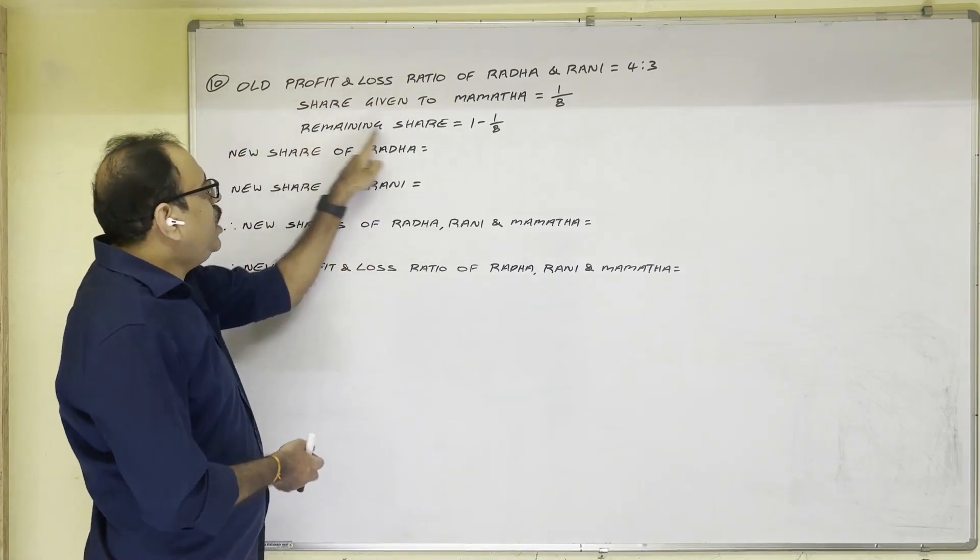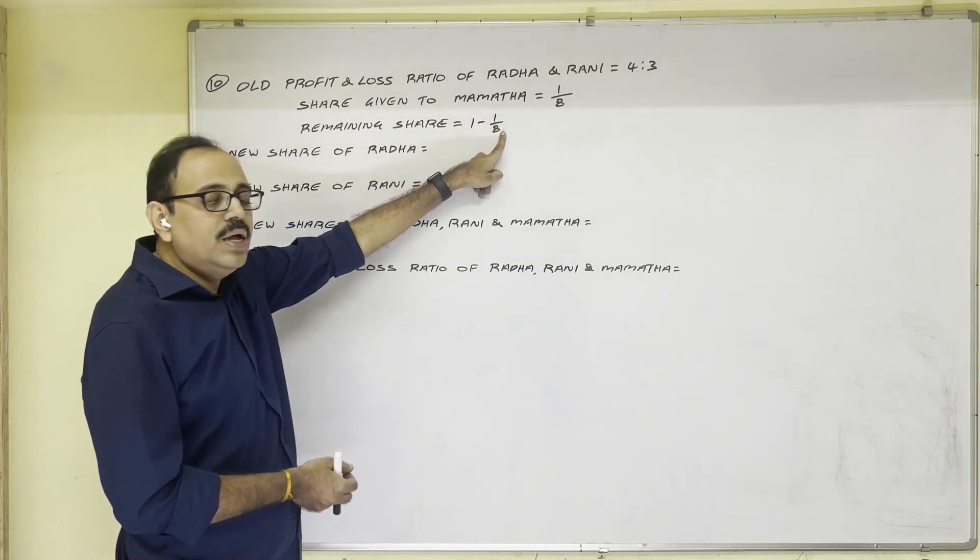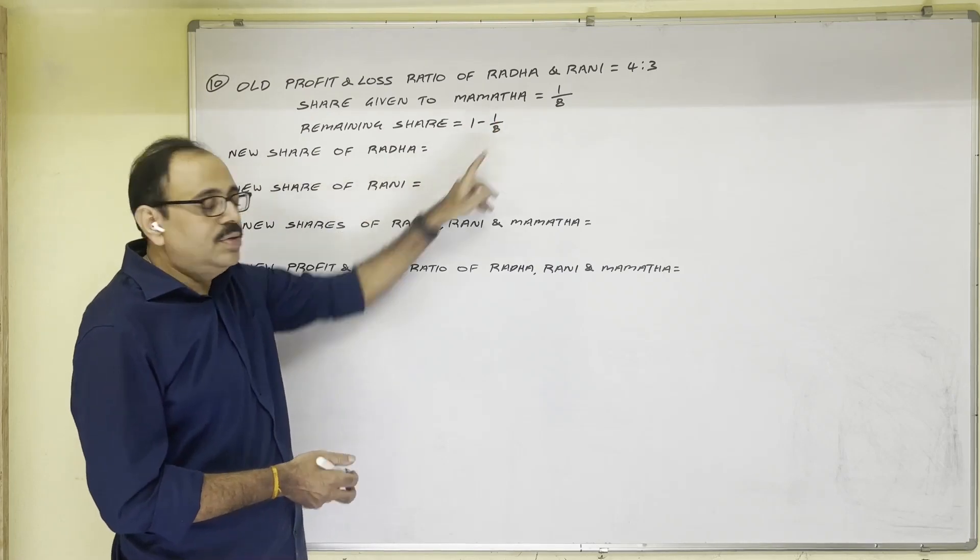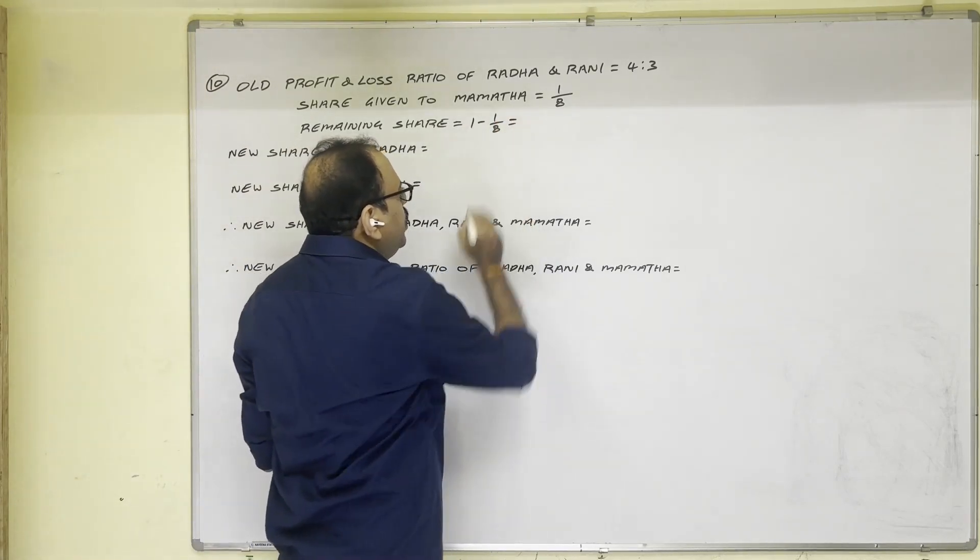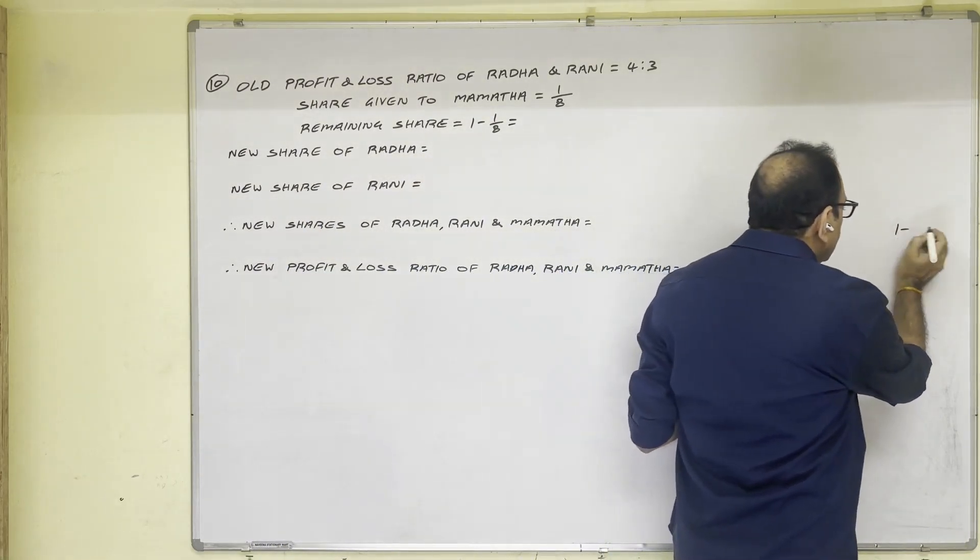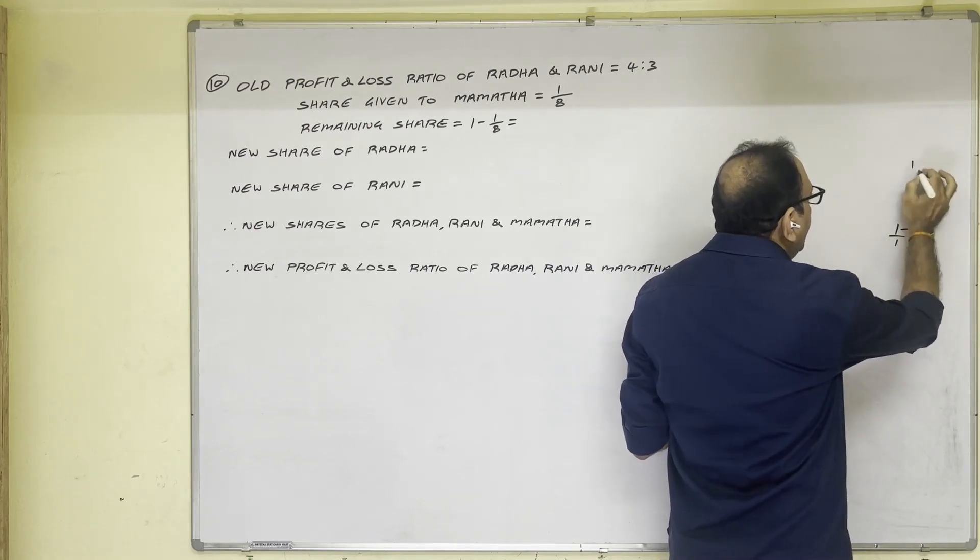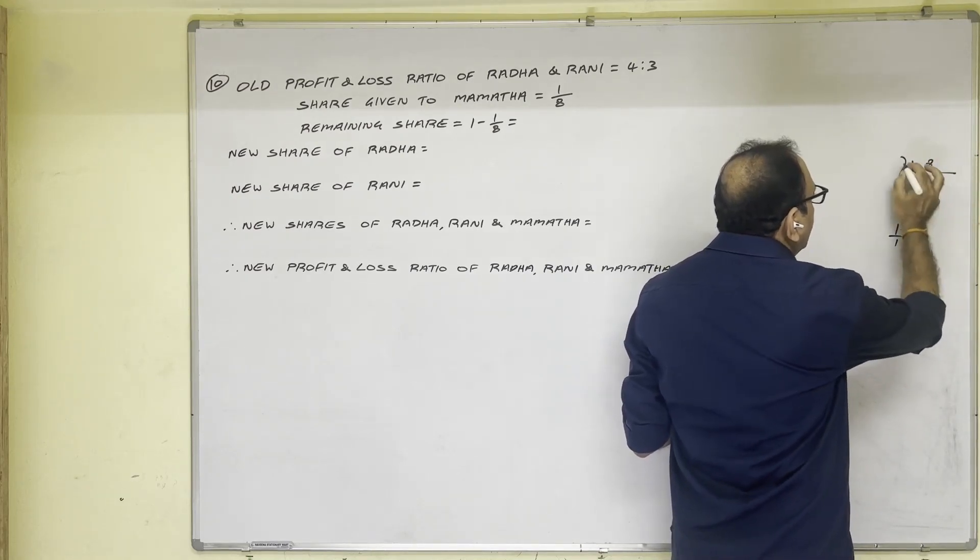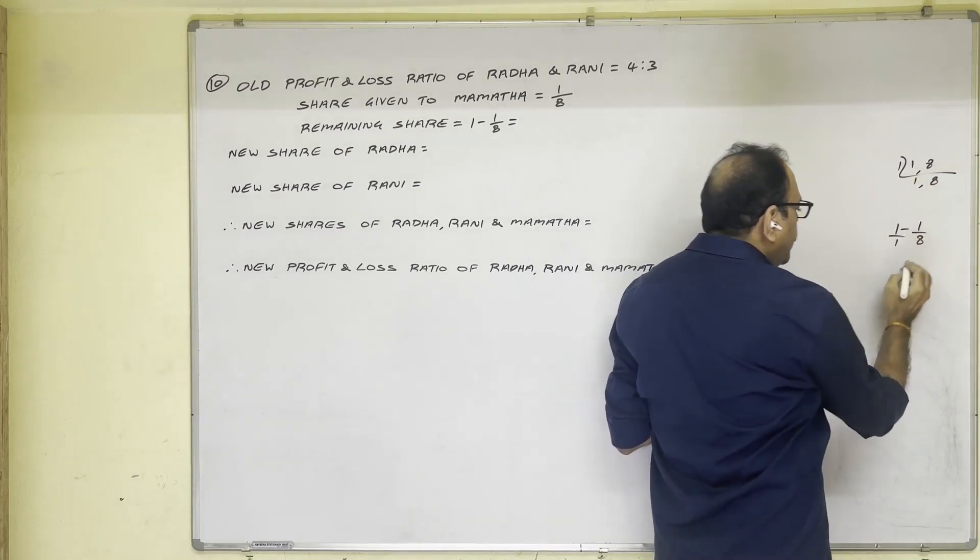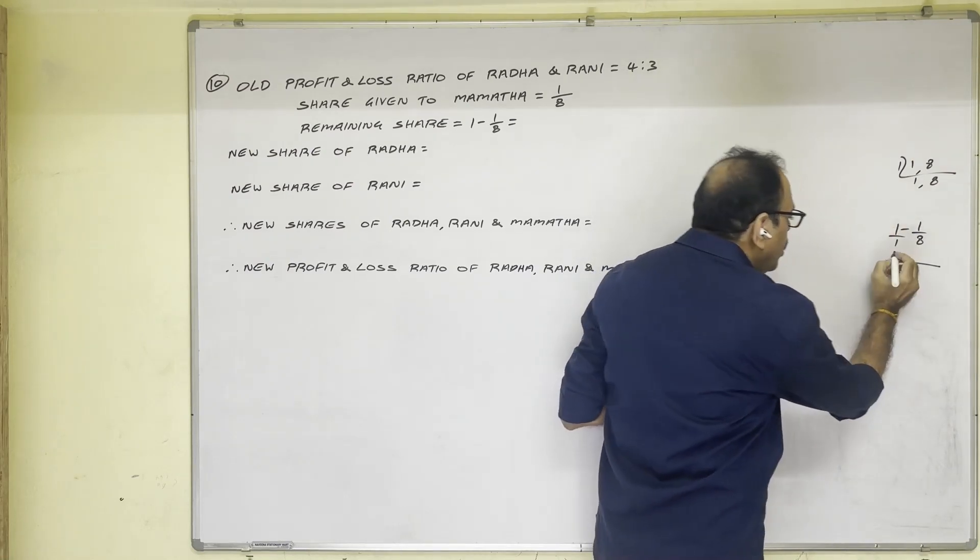How? Remaining share equals total share one minus what they're giving to new partner, one-eighth. So one minus one by eight. Actually speaking, we should do the LCM. One minus one by eight, here one by one will be there. LCM is 8. Eight into one is eight. Eight minus one equals seven by eight.